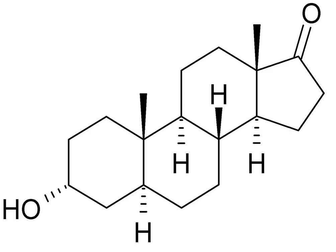Androsterone's 3-beta-isomer is epiandrosterone, and its 5-beta-epimer is etiocholanolone. The 3-beta, 5-beta-isomer is epitiocholanolone.